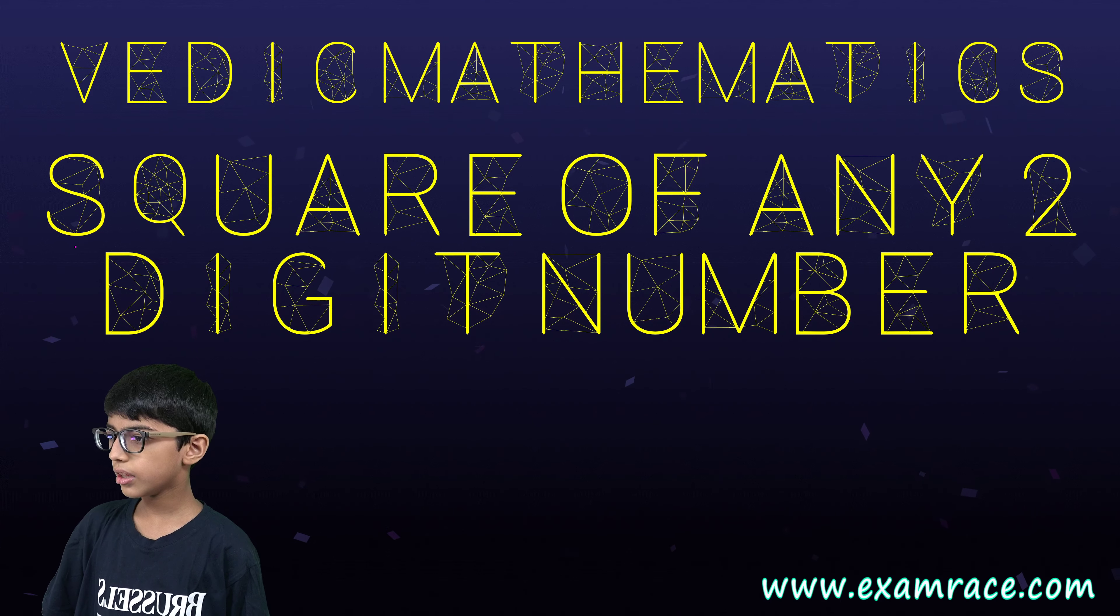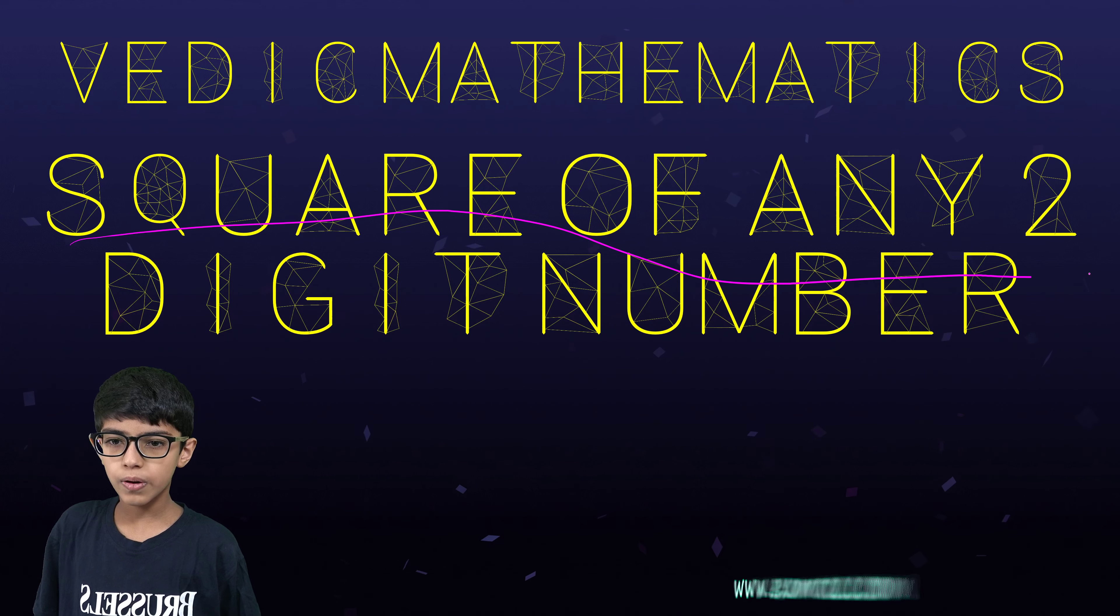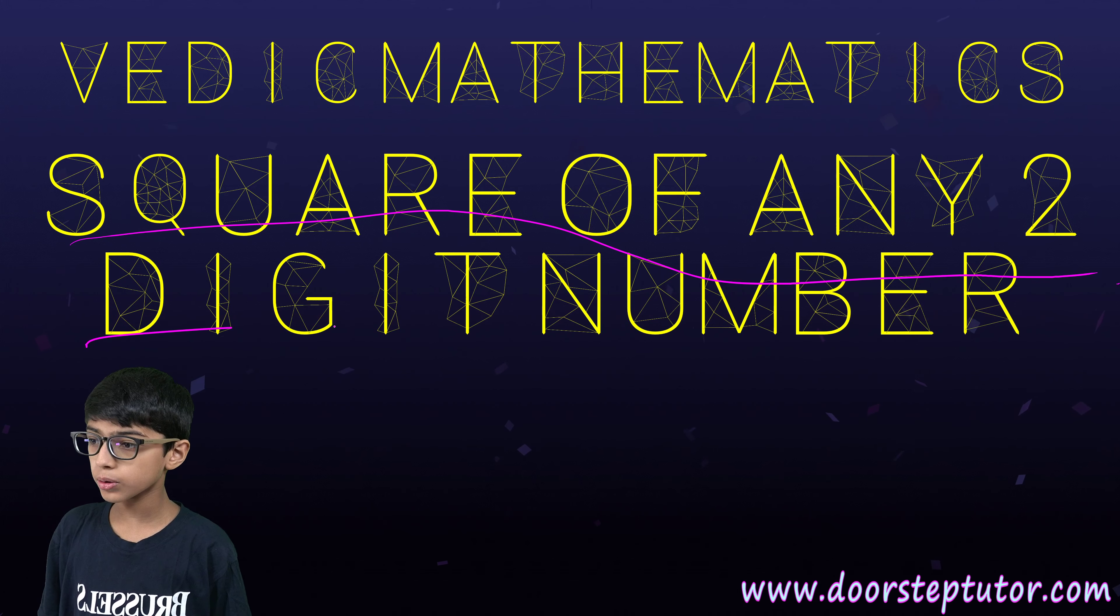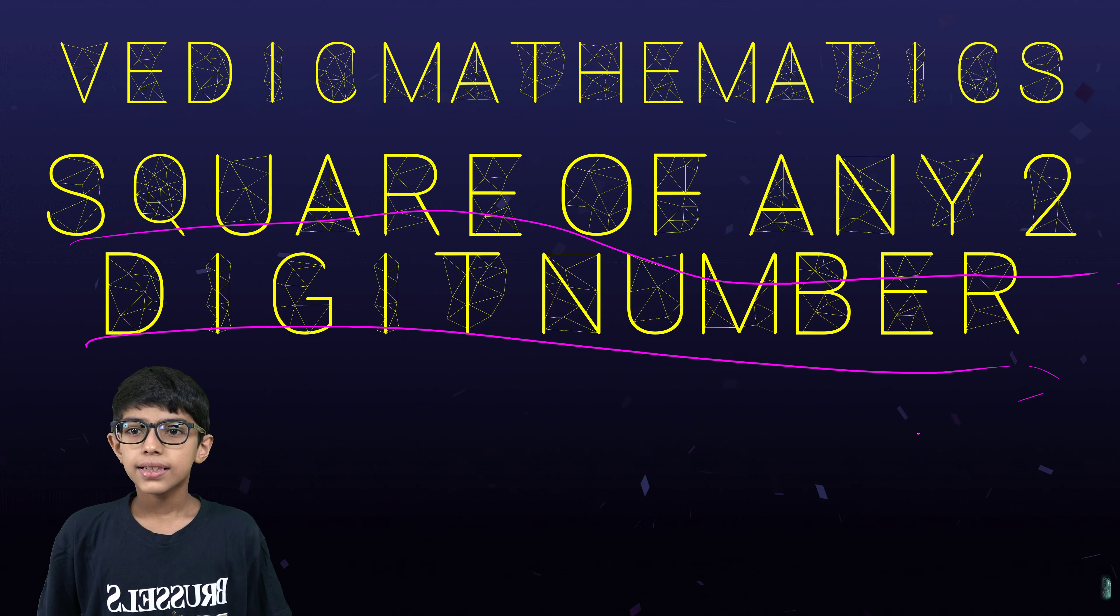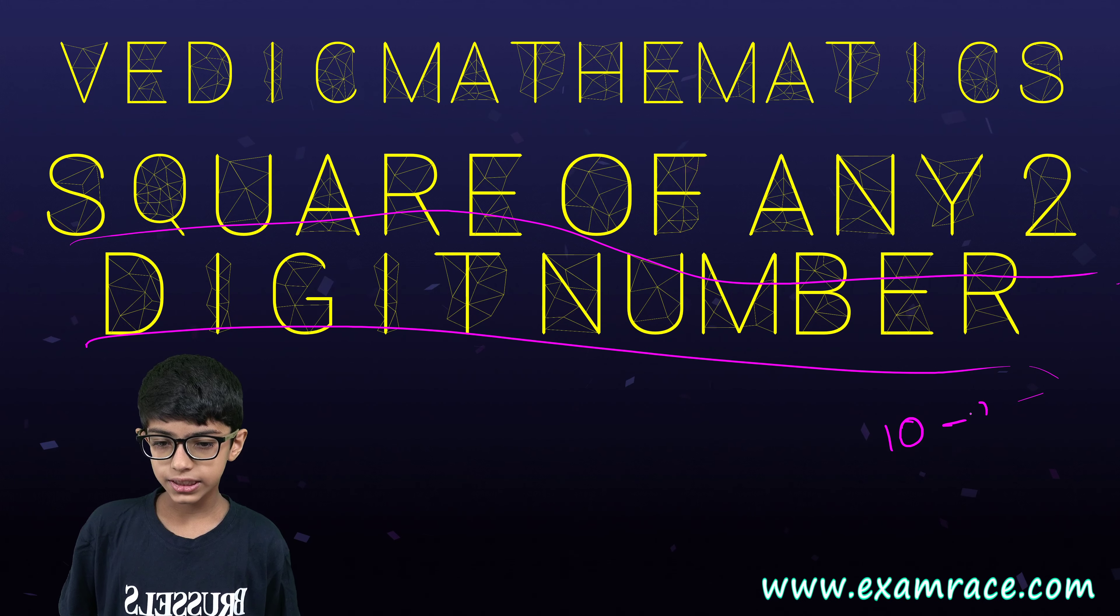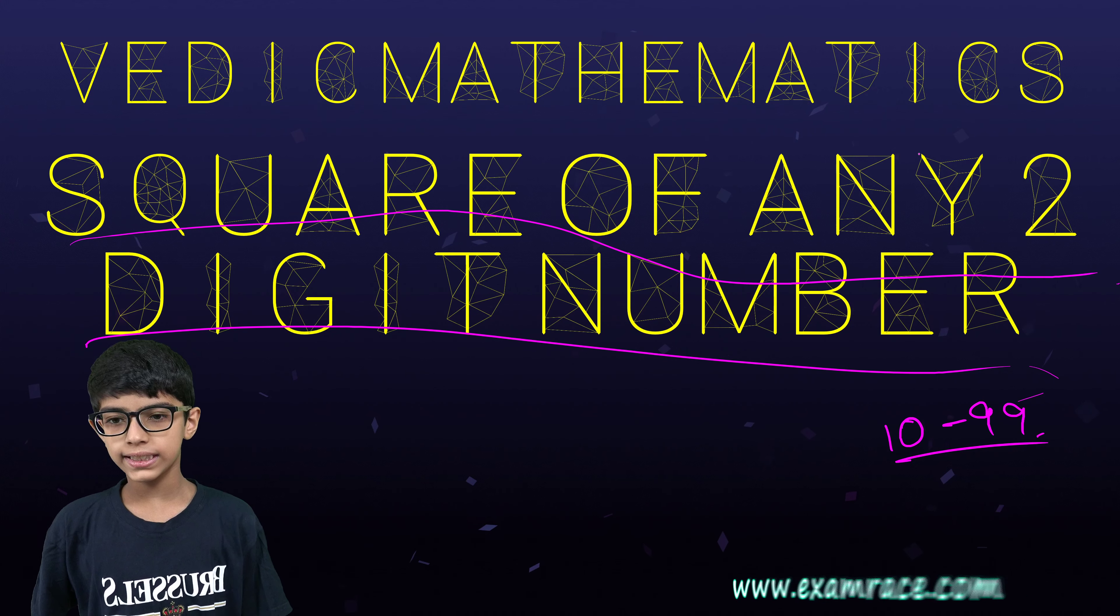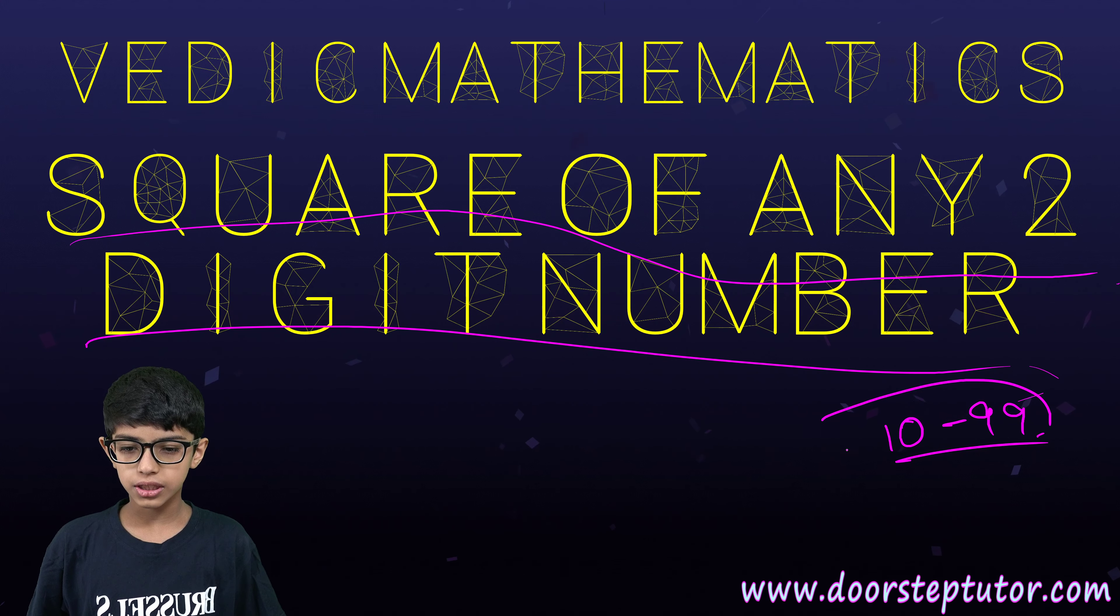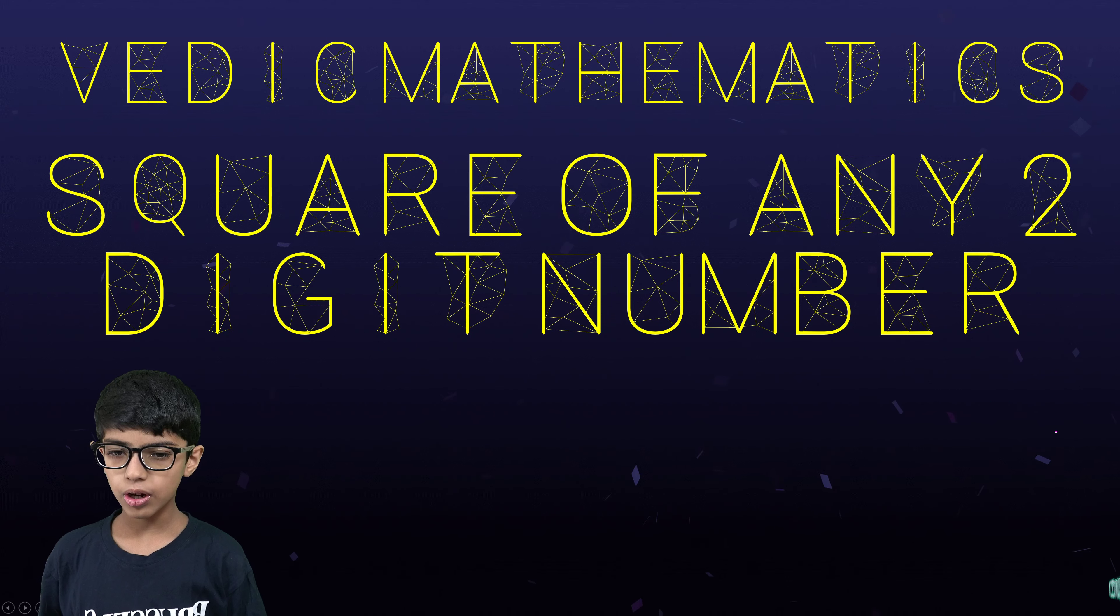Today we will learn how to take the square of any two-digit number. The limitation is from 10 to 99 as the two-digit numbers are from 10 to 99 only.